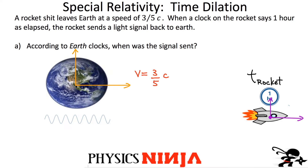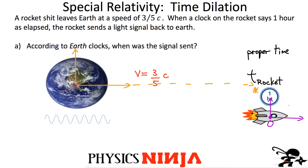Whereas on Earth, the two events happen at different locations — the start happens here, but the end happens when the rocket is over there, which is some distance away in Earth's reference frame. With respect to the rocket's reference frame, the rocket is always at the origin. So the rocket time is really the proper time, because both measurements — the start and the end — are made at the same position with respect to the rocket's reference frame.